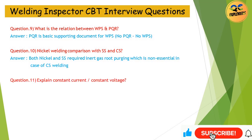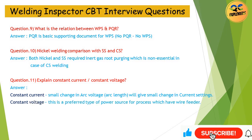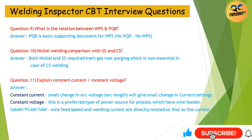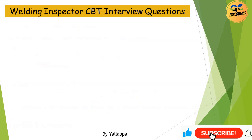Question 11: Explain constant current and constant voltage. Answer: Constant current — a small change in arc voltage will give a small change in current settings. Constant voltage — this is a preferred type of power source for processes with a wire feeder. GMAW, FCAW, and SAW: wire feed speed and welding current are directly related, so as the current increases, so does the wire feed speed, with a corresponding increase in burn-off rate to maintain arc voltage.